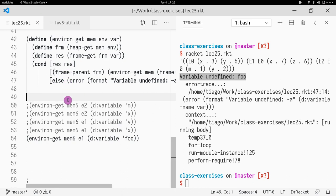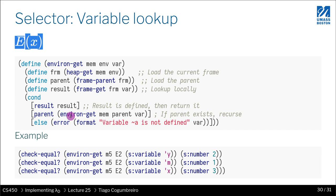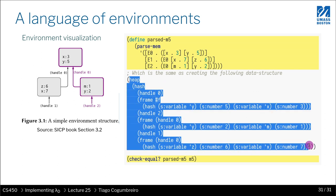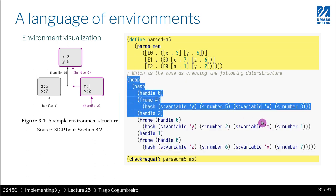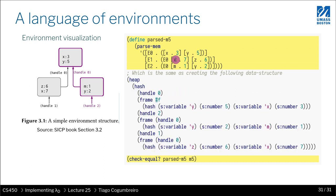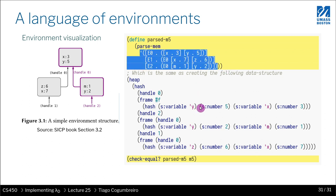So we were able to define environ-get, which represents the lookup slide. Finally, if you want to write this example, you might want to parse directly using parseMem, which will give you the heap. We also have a parse function that, given an S-expression, generates the data structures we need. That's basically it — that's the last bit you needed for homework 5. Good luck with that.